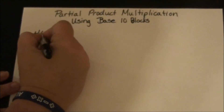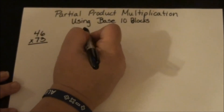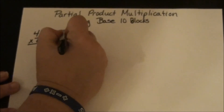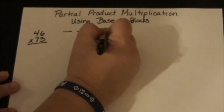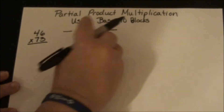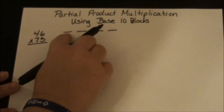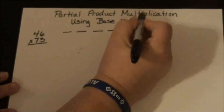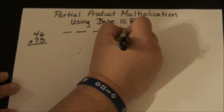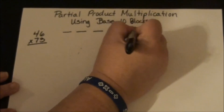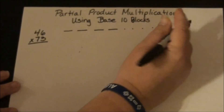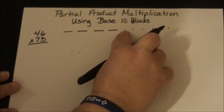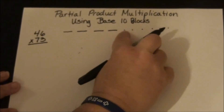For 46, we know that 46 is 4 tens and 6 ones. So we draw 10, 20, 30, 40 — these represent the bars of 10 cubes — and then 6 ones: 1, 2, 3, 4, 5, 6. These represent the cubes, or the units.